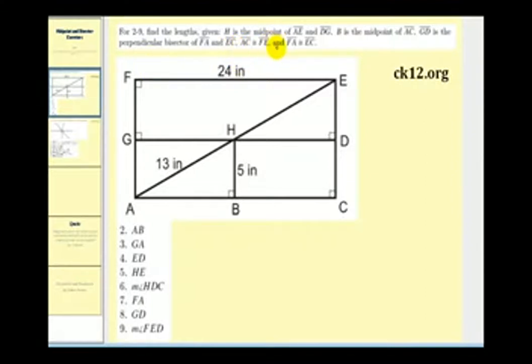We're told that H is the midpoint of AE and GD. So here's the segment AE. If H is the midpoint then segment AH is equal to the length of HE, and H is also the midpoint of segment GD. So GH is equal to HD.